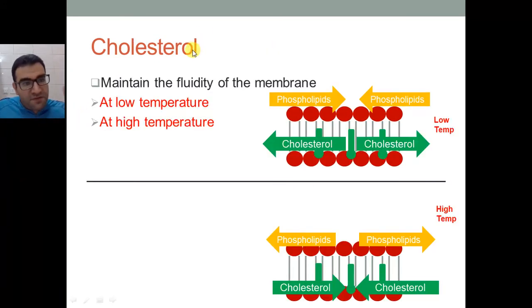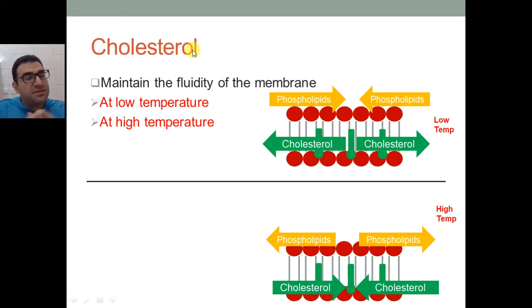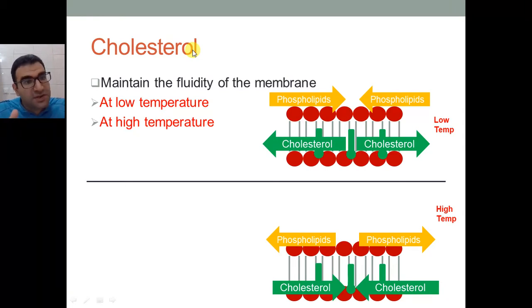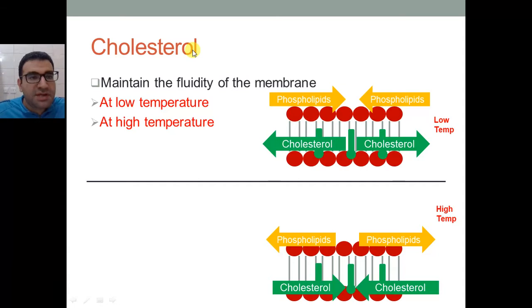So to summarize: phospholipids prevent polar molecules from moving in and out. Cholesterol maintains the fluidity of the cell membrane at both high and low temperatures.